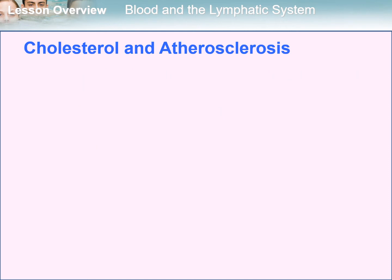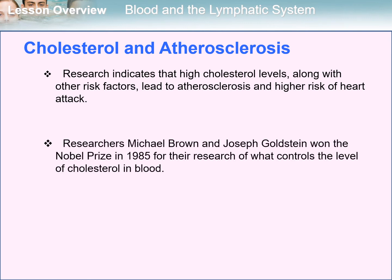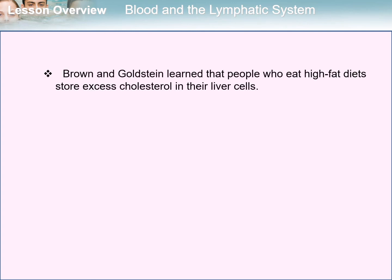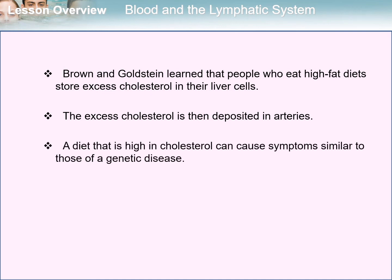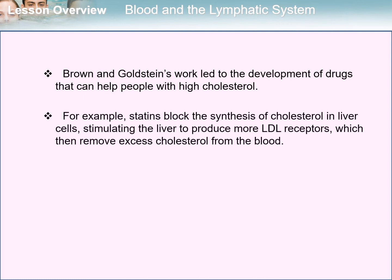What is the connection between cholesterol and circulatory diseases such as atherosclerosis? Research indicates that high cholesterol levels, along with other risk factors, lead to atherosclerosis and higher risk of heart attack. Researchers Michael Brown and Joseph Goldstein won the Nobel Prize in 1985 for their research on what controls the level of cholesterol in blood. They learned that people who eat high-fat diets store excess cholesterol in their liver cells, and the excess cholesterol is then deposited in arteries. A diet high in cholesterol can cause symptoms similar to those of a genetic disease. Their work led to the development of drugs such as statins, which block the synthesis of cholesterol in liver cells, stimulating the liver to produce more LDL receptors, which then remove excess cholesterol from the blood.